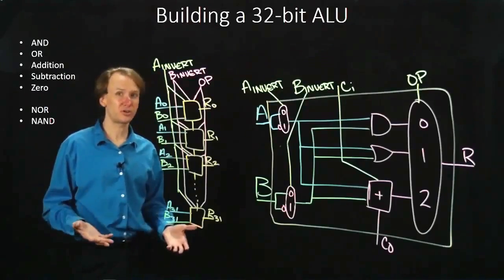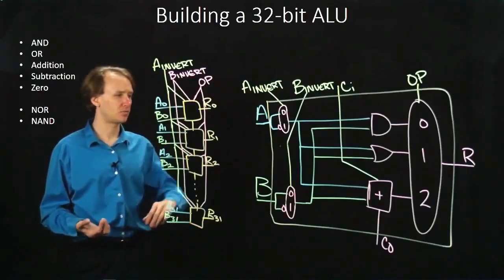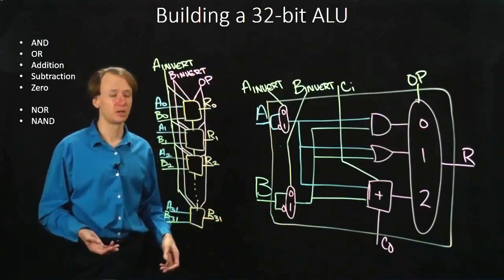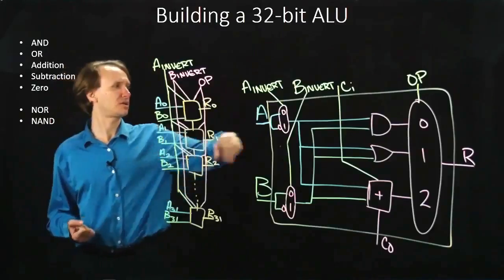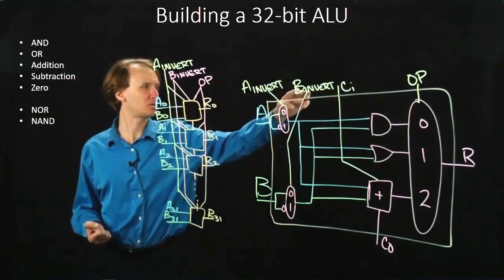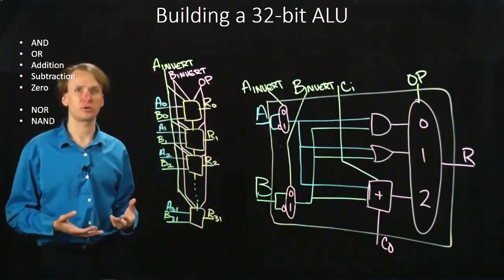If we're doing a logical operation instead, then we don't care what the adder does anyway. So it doesn't matter if the carry in is zero or one. It turns out the carry in is always the same as the B invert line.